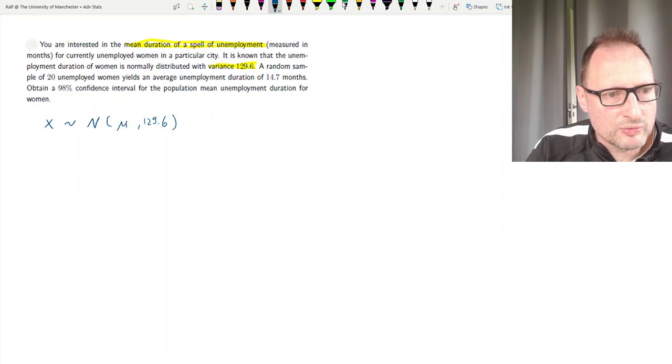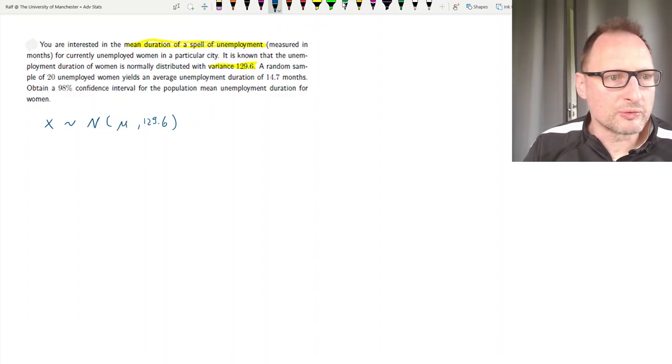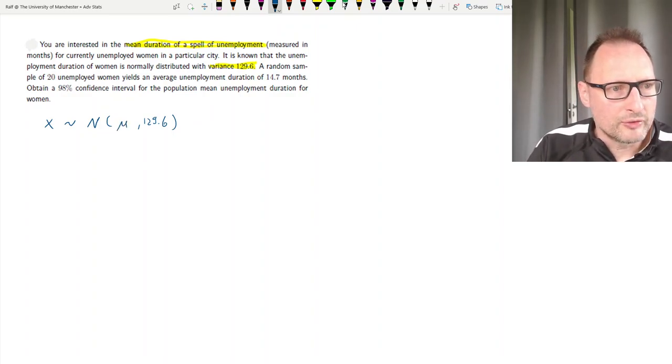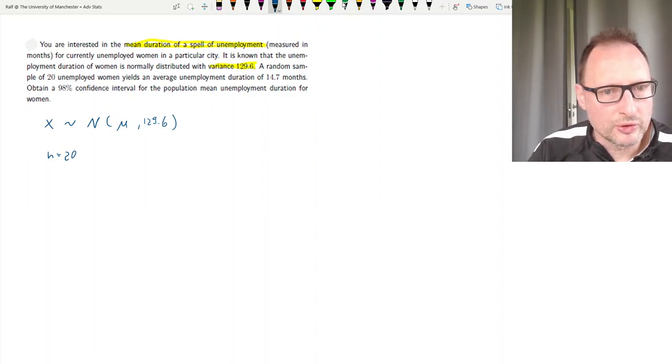Now, what we don't know is what the population mean is, and that's what we are interested in. A random sample of 20 unemployed women, so we have a sample size of 20, yield an average unemployment duration of 14.7. So X bar is 14.7. Obtain a 98% confidence interval for the population mean unemployment for women.